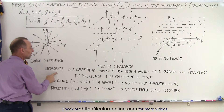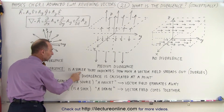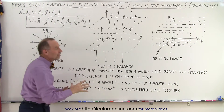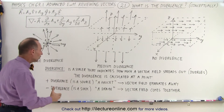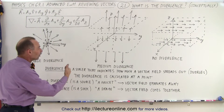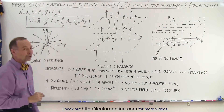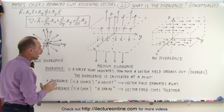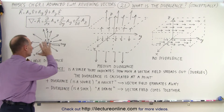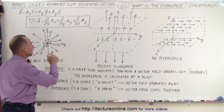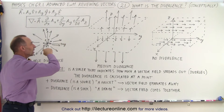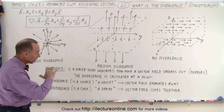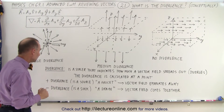The divergence can be defined as a scalar that indicates how much a vector field spreads out or diverges. The divergence is calculated at a particular point. The way it's defined, it may not change much in any direction, or the change could be constant or could increase further out. We'll show you some examples of that.